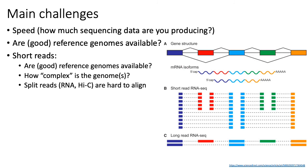Another main challenge is the availability of good reference genomes. For organisms like humans, Drosophila, C. elegans, or yeast, relatively good reference genomes are available. But for metagenomics, microbiome studies, and similar fields, there's often a lack of good reference genomes, and that's where many alignment problems occur.